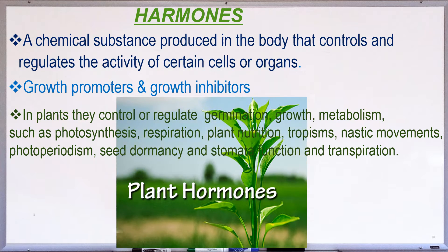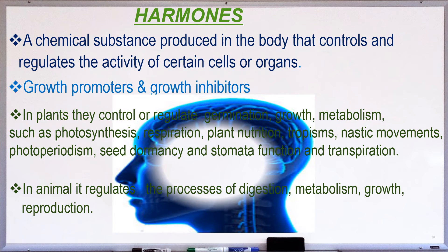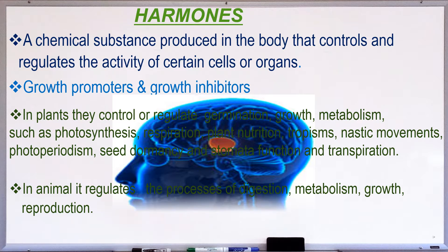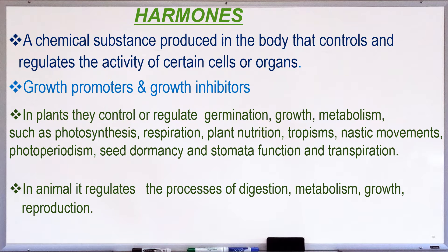In animals, the endocrine system acts through chemical messengers called hormones, which are produced by specialized glands. It regulates the processes of digestion, metabolism, growth, development and reproduction.